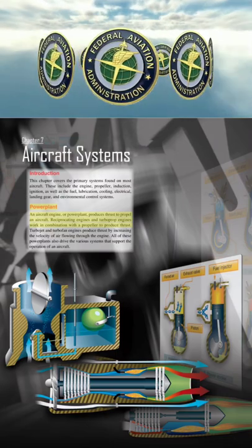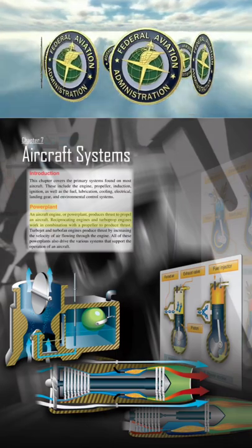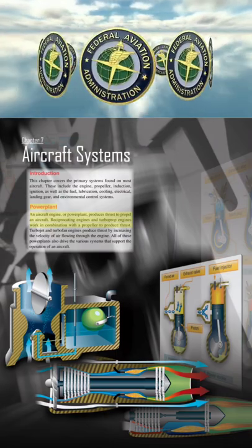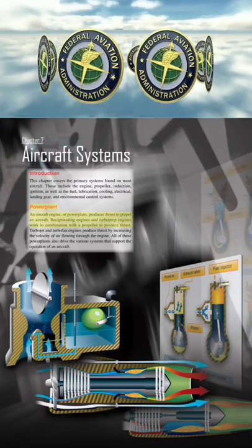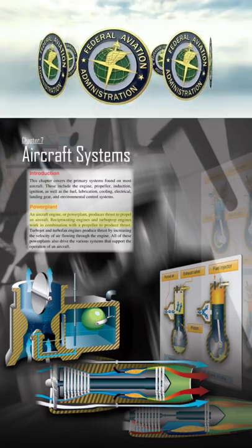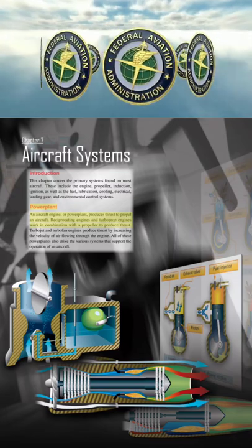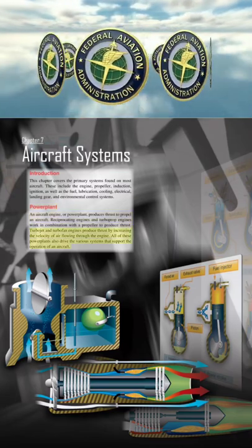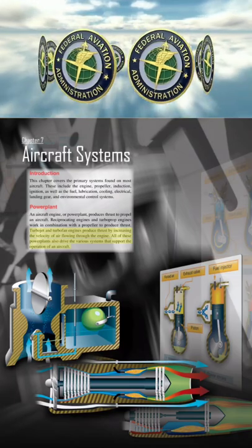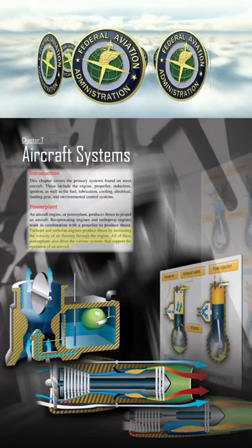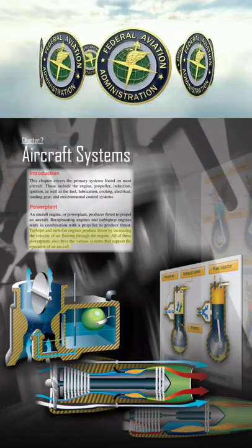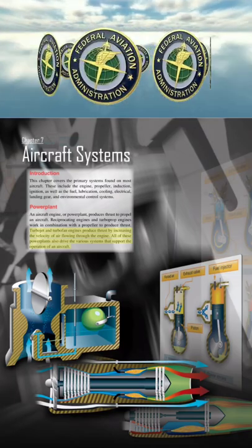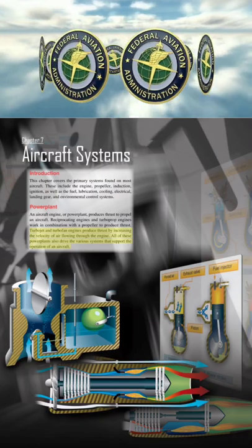An aircraft engine, or powerplant, produces thrust to propel an aircraft. Reciprocating engines and turboprop engines work in combination with a propeller to produce thrust. Turbojet and turbofan engines produce thrust by increasing the velocity of air flowing through the engine. All of these powerplants also drive the various systems that support the operation of an aircraft.